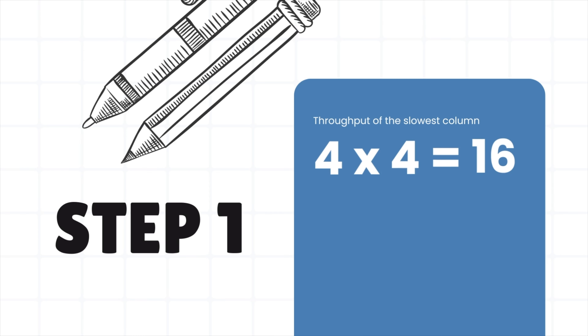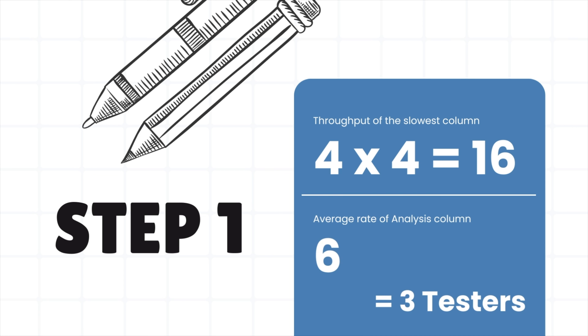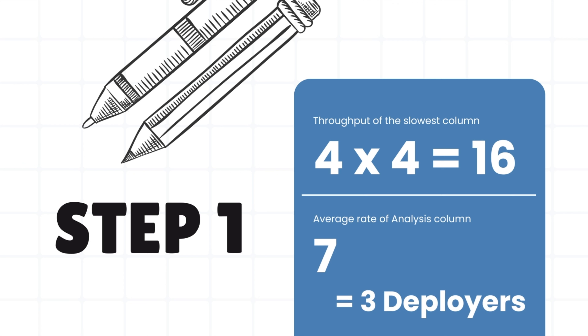To calculate the other WIP limits, divide the throughput of the slowest column by the average rate for each step. This gives us the number of people needed for each step to match the slowest step's throughput. The throughput for the development column is four items per month multiplied by four developers, equals 16 items per month. So the number of people needed in each column: for analysis, 16 divided by six items per month per person equals 2.67, rounding to three analysts. For design, 16 divided by five equals 3.2, giving us four designers. For test, 16 divided by six equals 2.67, rounding to three testers. For deploy, 16 divided by seven equals 2.29, rounding to three deployers.